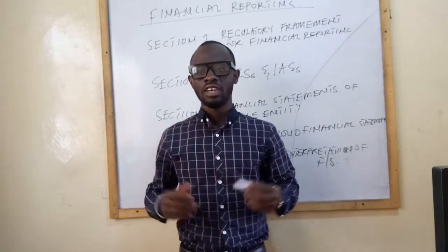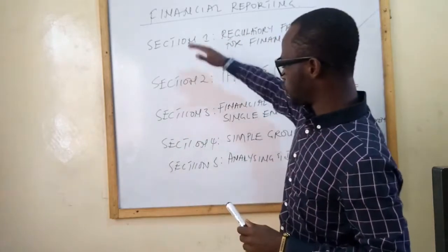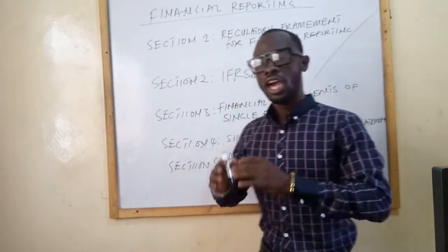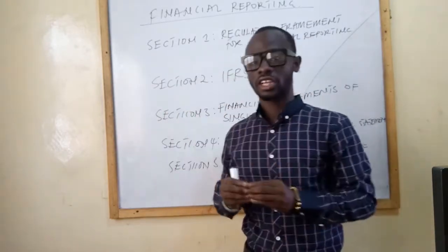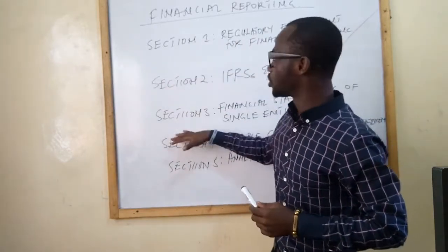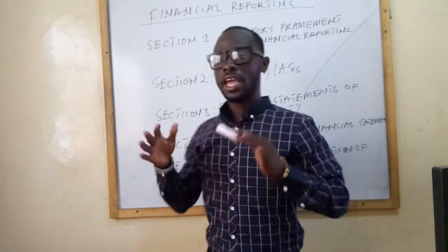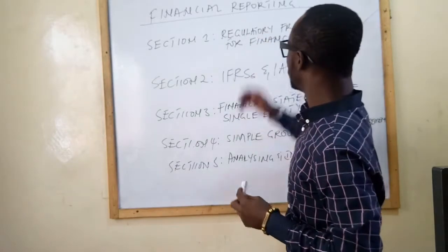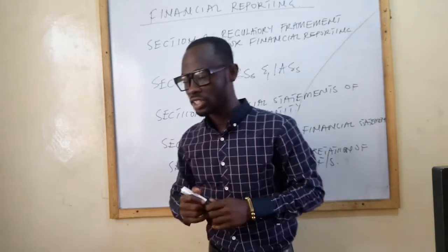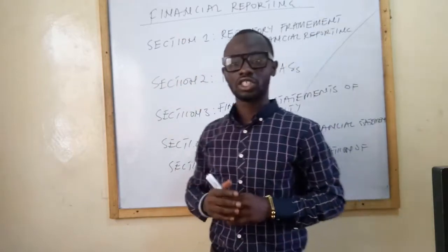I have divided the financial reporting syllabus into five sections to enable you to understand financial reporting very well and prepare for the examination. You have Section 1, Section 2, Section 3, Section 4, and Section 5. In Section 1, we will be dealing with issues about the regulatory framework of financial reporting, discussing conceptual frameworks and regulatory frameworks.